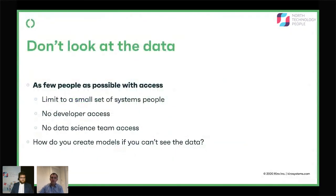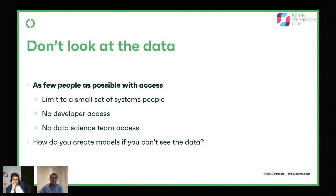The first one is straightforward: don't look at the data, and have as few people as possible in your company with access to it. At Kira, we have a very small team of systems people who have access to servers. They don't look at the data themselves — they're instructed not to, and they have all the security checks. We don't give anyone else access, including developers and our data science team. No one gets it. You can imagine that causes issues, like debugging things when you can't get access to examples that cause bugs, but it is possible.